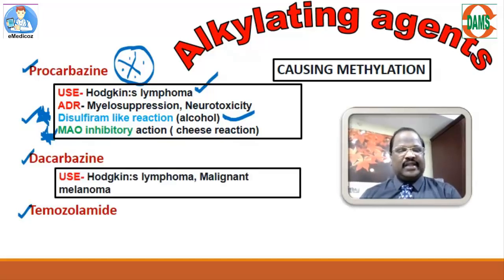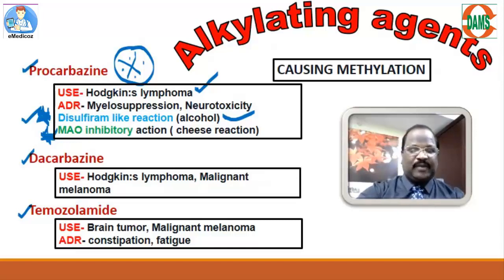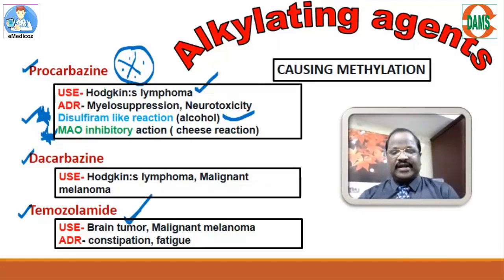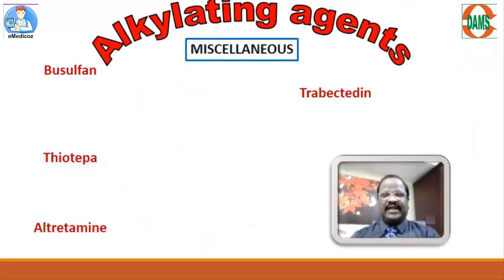Dacarbazine is useful mainly for Hodgkin's lymphoma as well as malignant melanoma. Temozolomide is highly lipid soluble, so useful for brain tumor and also for malignant melanoma. Important adverse effects of temozolomide include myelosuppression, constipation, and fatigue — the main two problems being constipation and fatigue.